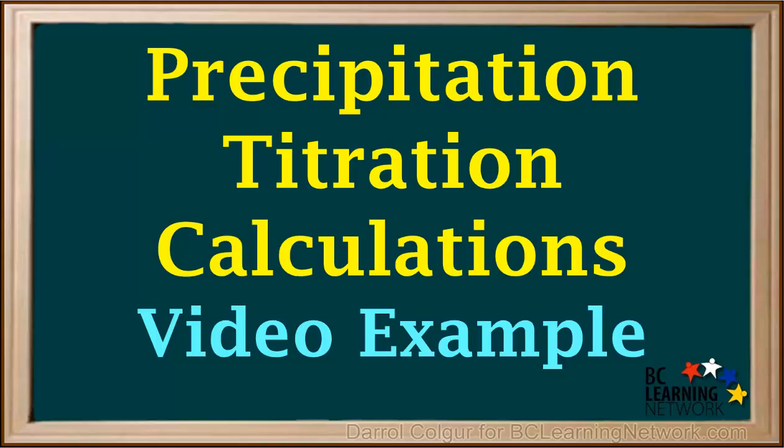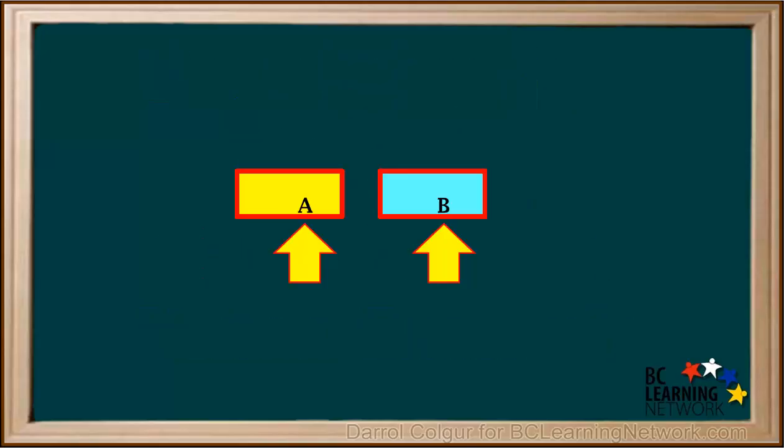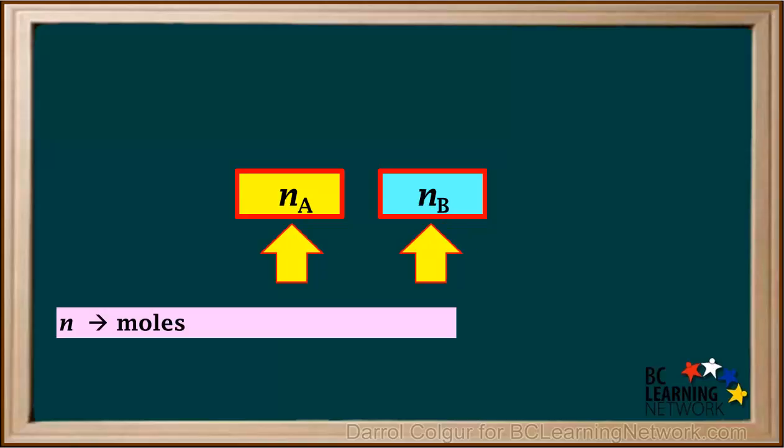Here, we'll be given some data from a titration and asked to use this data to calculate the concentration of an ion in a sample. We'll start by looking at how we handle titration calculations in general. Titration calculations in CHEM 12 involve the reaction between two reactants, which we'll call A and B here.